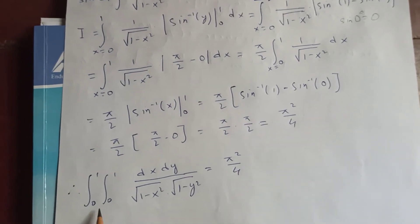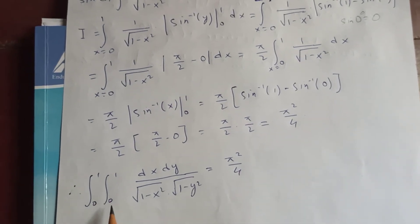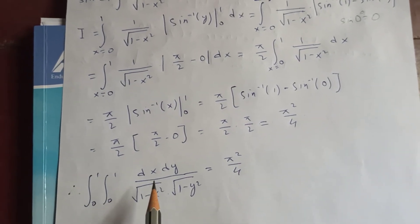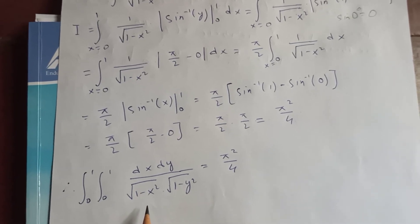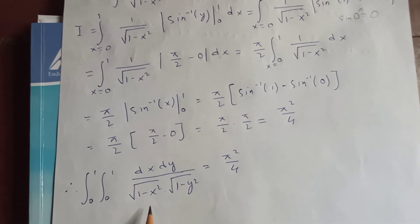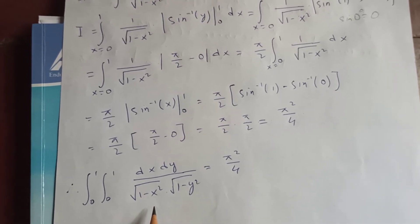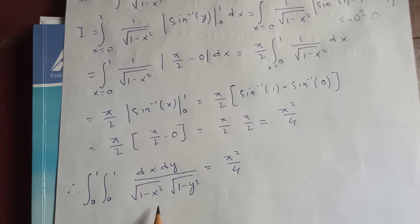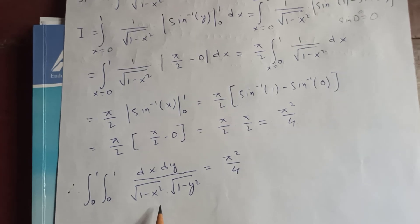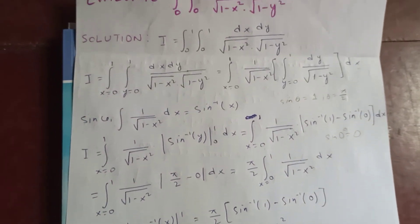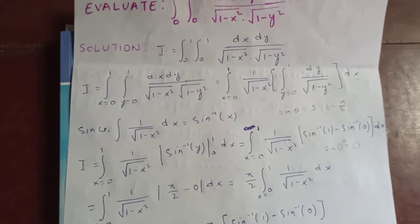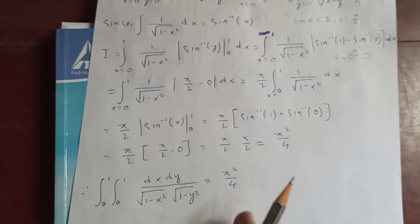So our integral from 0 to 1, integral from 0 to 1, dx dy by square root of 1 minus x squared into square root of 1 minus y squared equals pi squared over 4. This is our answer for the required integral.